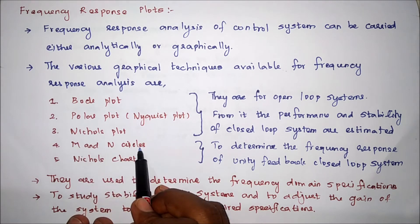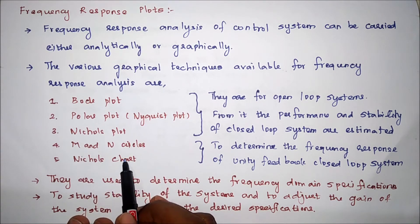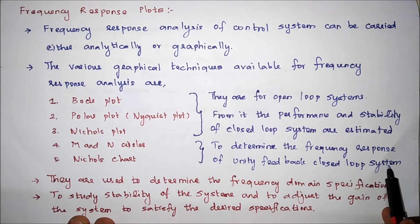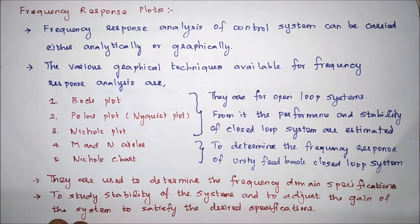M and N circles and Nichols chart are used to determine the frequency response of unity feedback closed loop systems from the information of the open loop system.